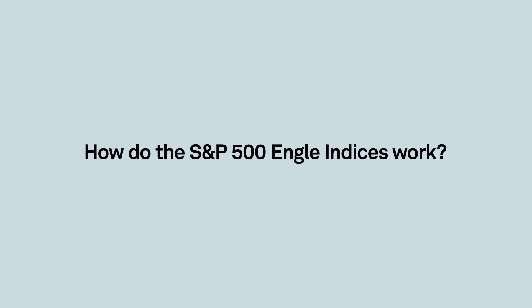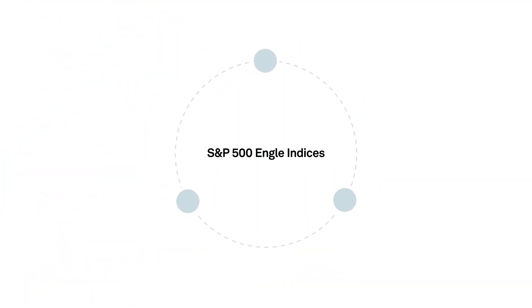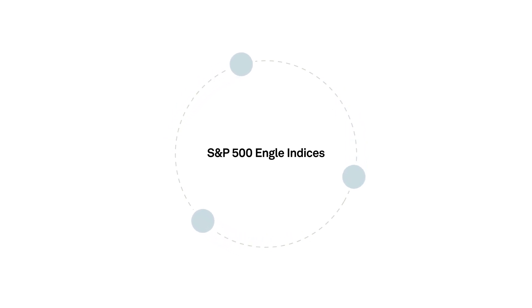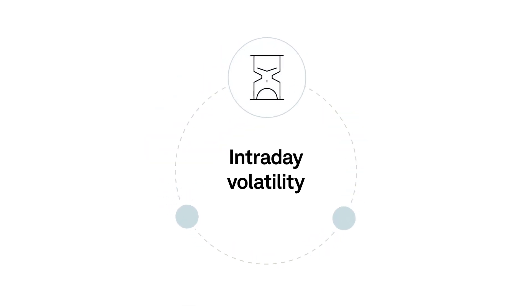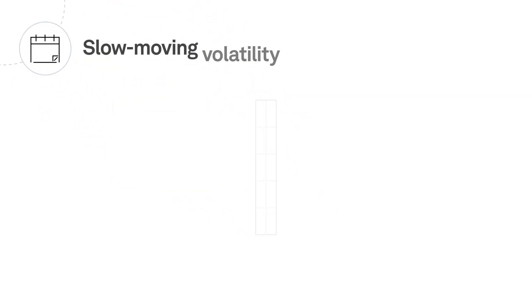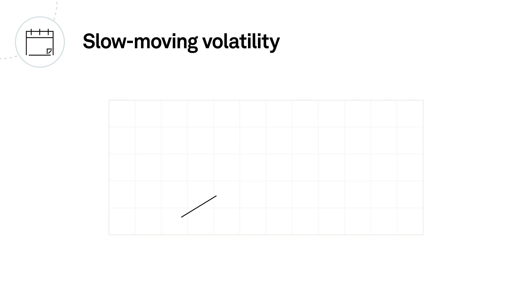So how do the S&P 500 Engel indices work? The indices take an innovative approach to modeling volatility by measuring it in three distinct ways: slow-moving volatility, time-of-day volatility, and intraday volatility. For slow-moving volatility, the indices use GARCH-style models with 20 years of realized volatility data to predict daily volatility from historical patterns.